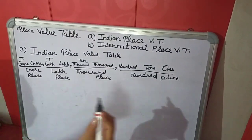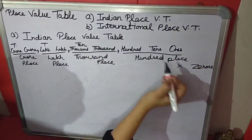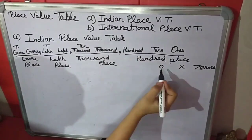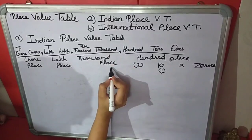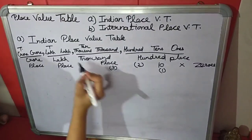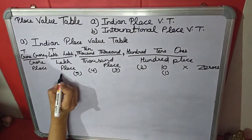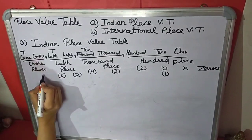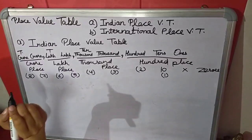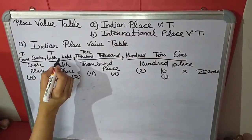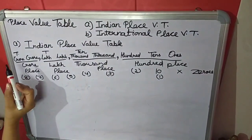Now we will talk about zeros in each place. In Ones there is no zero; in Tens there is one zero; in Hundreds there are two zeros; in Thousands there are three zeros; in Ten Thousands four zeros; in Lakhs five zeros; in Ten Lakhs six zeros; in Crores seven zeros; and in Ten Crores eight zeros. So you have to learn these: how many zeros in Lakh — five; how many zeros in Hundred — two; how many zeros in Ten Crore — eight.